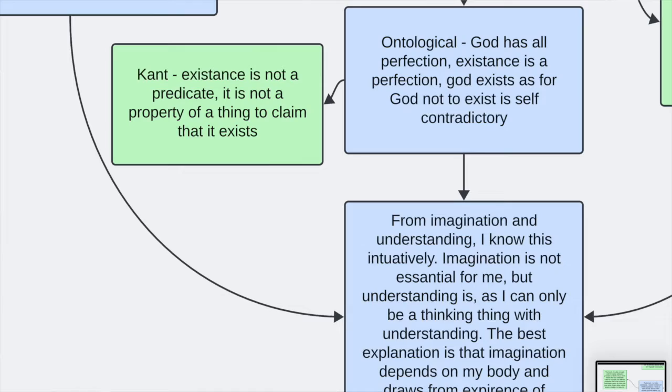The ontological argument also doesn't work. Kant really swiftly shows the ontological argument from Descartes doesn't work. Literally in one line. That's how good this criticism is. Kant says, existence is not a predicate. Existence is not a property of a thing.